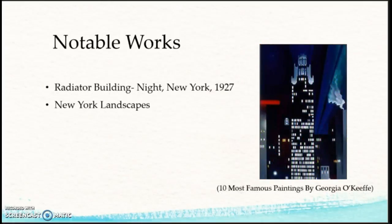Another category of her art was New York landscapes. She put an abstract spin on her portrayal of the city, as you can see in this piece, Radiator Building, Night, New York, that she completed in 1927. These paintings also helped contribute to American modernism.